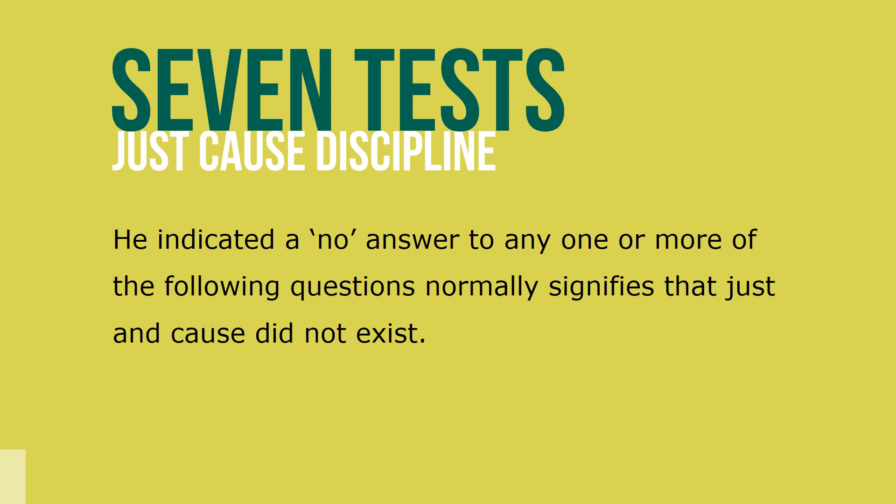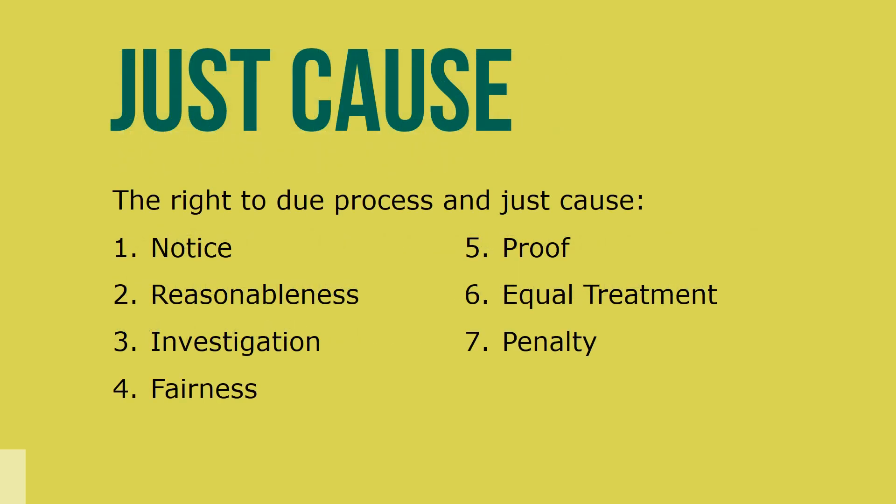The more questions an agency can answer with yes, the stronger the justification for discipline and the more likely it will be upheld if challenged. When the right-to-due process known as just cause has been bargained for, the process has been reduced to seven categories.